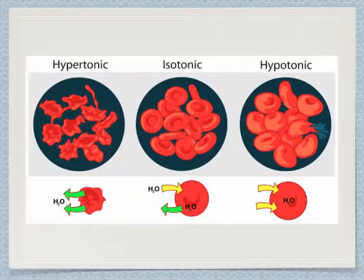In an isotonic solution, water goes into the cell at the same rate that water comes out of the cell. There's the same pressure inside the cell as outside the cell, and the red blood cell maintains its characteristic sort of disc shape.